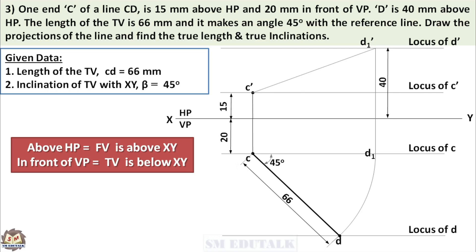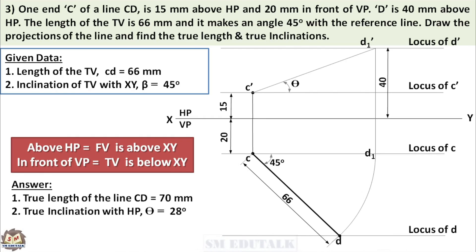Measure the length of the true length line and its inclination. You will get the true length as 70 mm and true inclination with HP, that is theta, as 28 degrees. We have finished the top view. Next, how do you draw the front view? We found the true length from the drawing as 70 mm. So using this data, we can draw a true length line below the XY line. It can be projected above the XY line and then we will get the front view once the projected line is rotated.